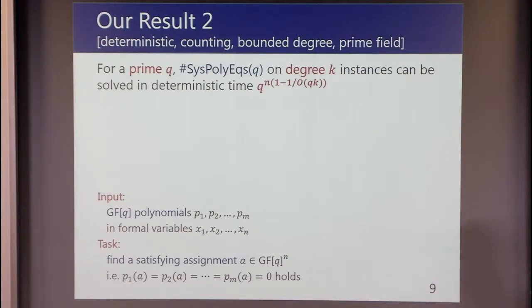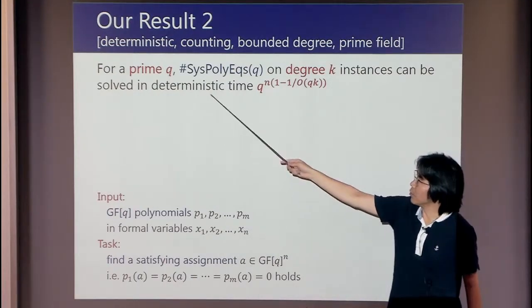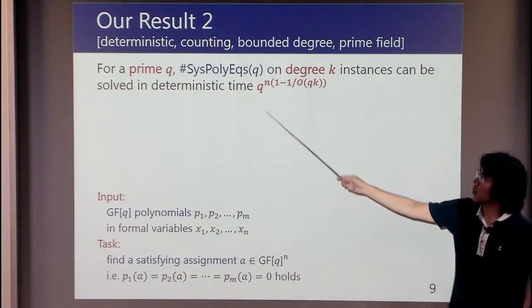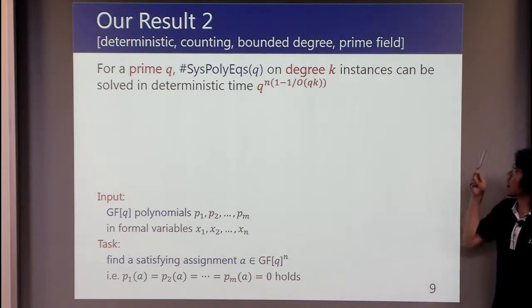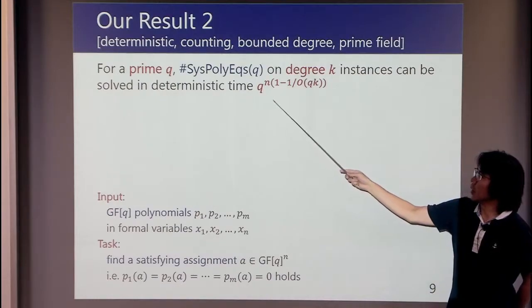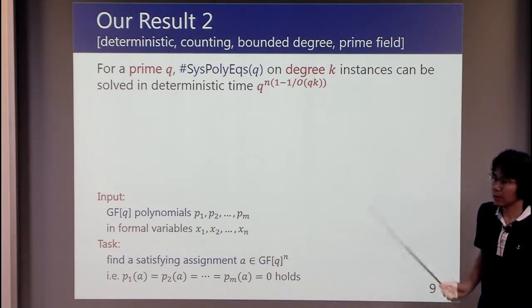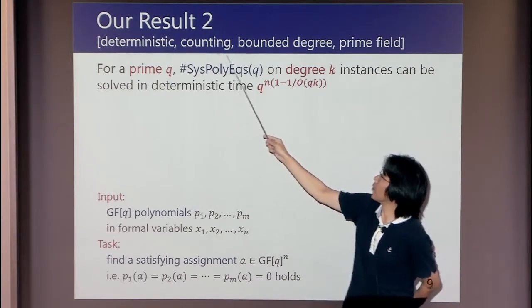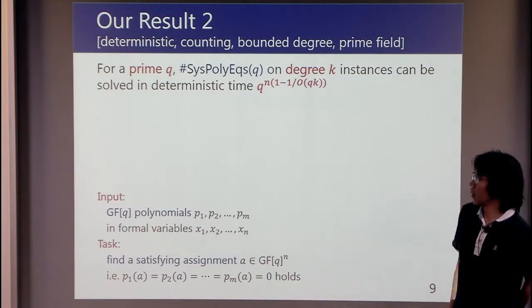This is our second result. Here q should be a prime number. In this case, we show #SysPolyEqs(q) on degree k instances can be solved in deterministic time q^(n(1-1/O(qk))). So the points here are deterministic and counting and prime field.